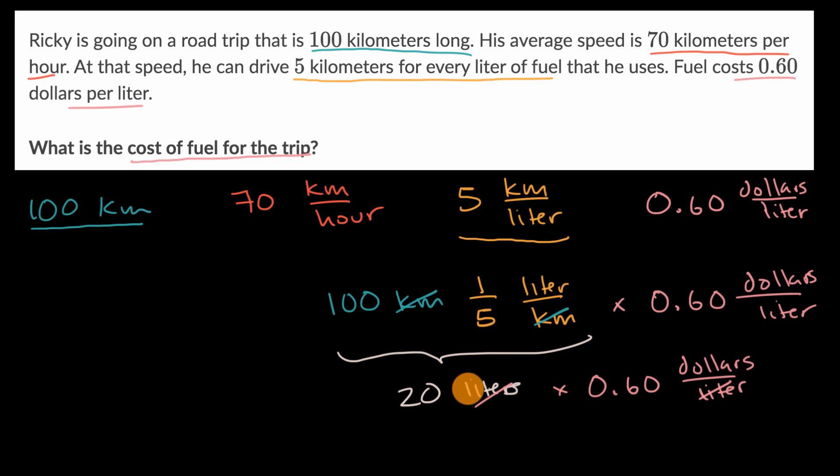The liters cancel out, so it's good that our units work out. We're left with just dollars here. So 20 times 0.60 is going to get us to 12. So we are left with 12 dollars and we're done. That's the cost of our trip.